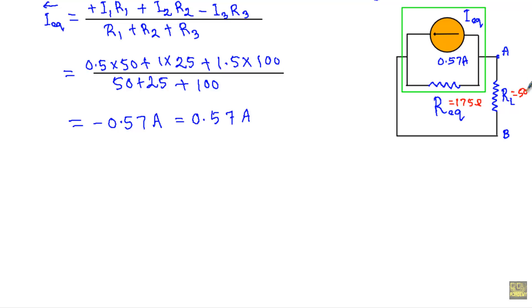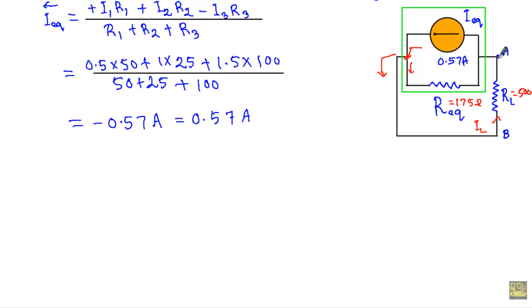So R_equivalent is 175 ohm and R_L is 500 ohm. The current source is supplying current and it will divide into two portions. The current flowing through R_L is denoted I_L, and it flows from terminal B to terminal A.